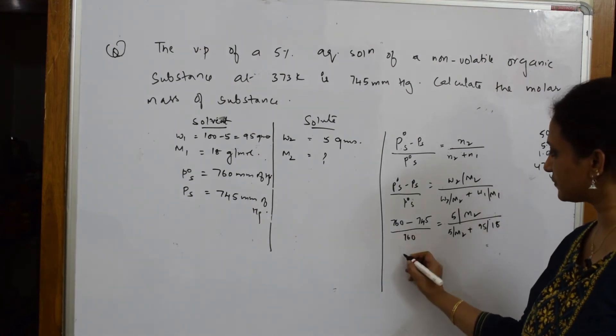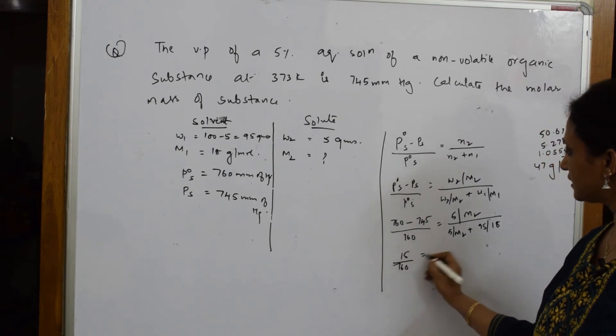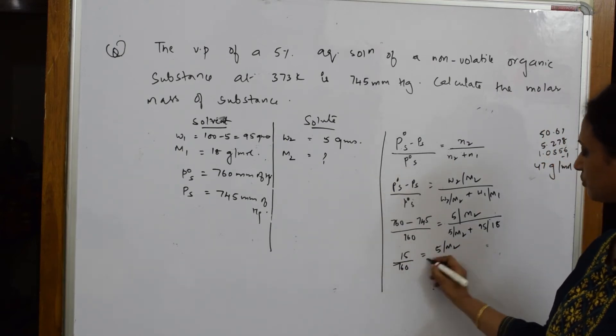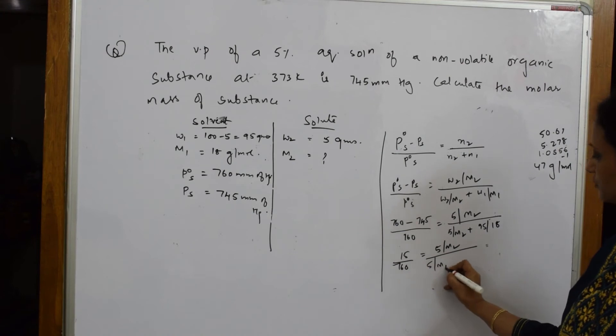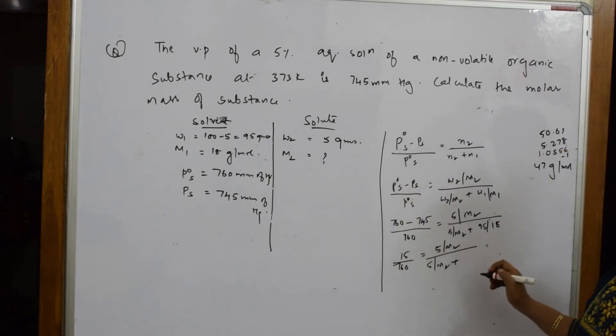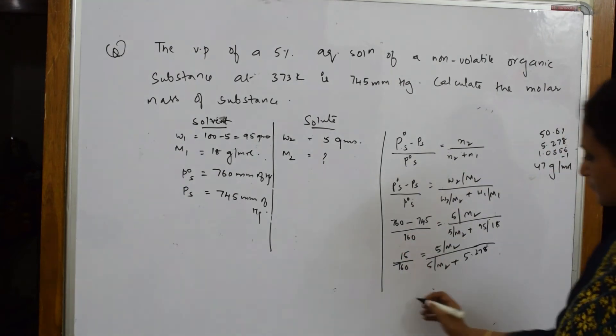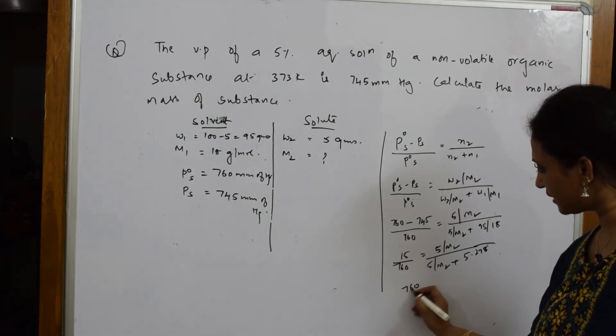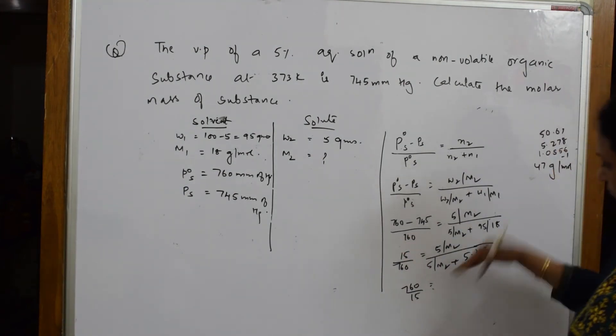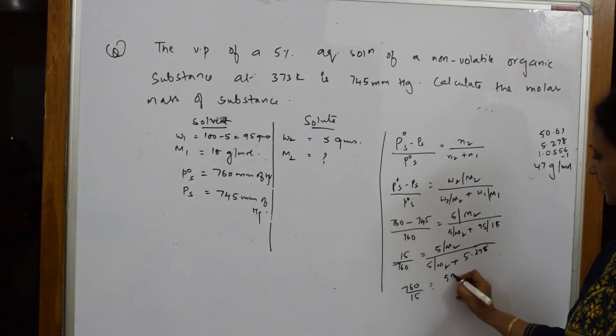This is 15, isn't it? 15 by 760. It is again 5 by m2 by 5 by m2. When I solve this, I get this particular thing. If I solve, I get 5.278. Then I can rewrite this whole equation like this also, isn't it? 760 by 15 is equal to the reverse of this.